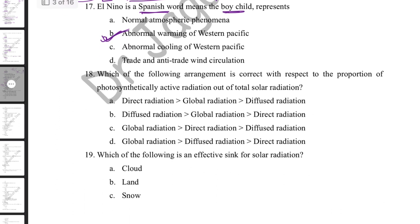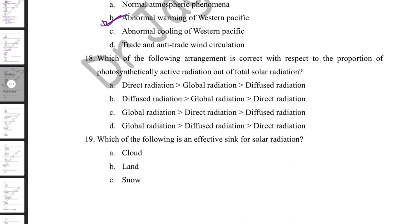Regarding the proportion of photosynthetically active radiation (PAR) out of total solar radiation: PAR is highest in diffuse solar radiation (around 65%), followed by global solar radiation (50%), and then direct solar radiation (45%).